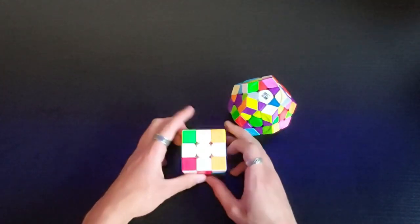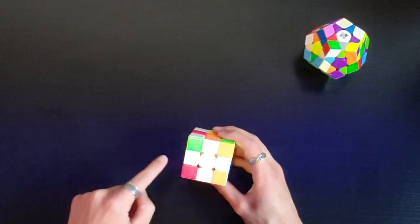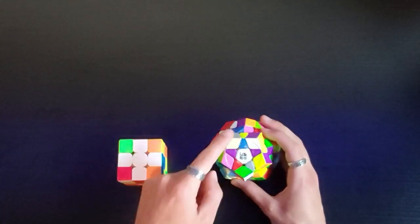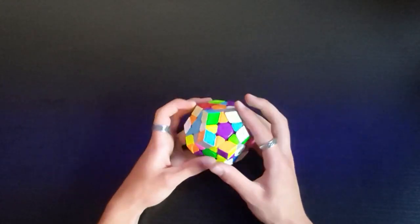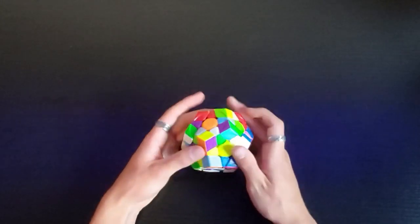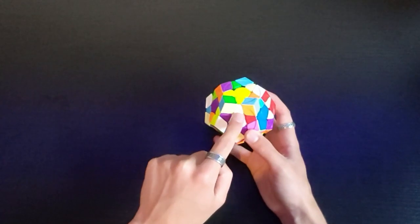Now the first step of solving a normal Rubik's Cube is to make a white cross like this. But since each face of this cube is a pentagon, I'm going to need to make a star. So I think I can just do something like that. And that is my first piece in, second piece,